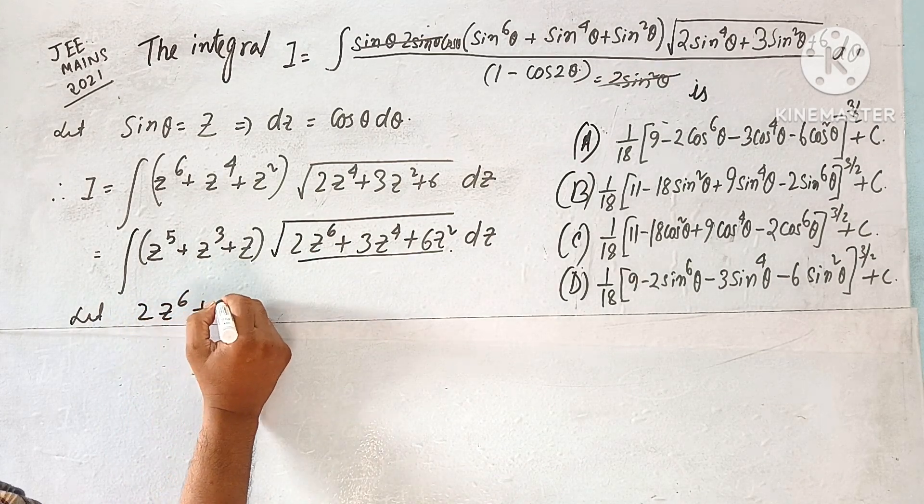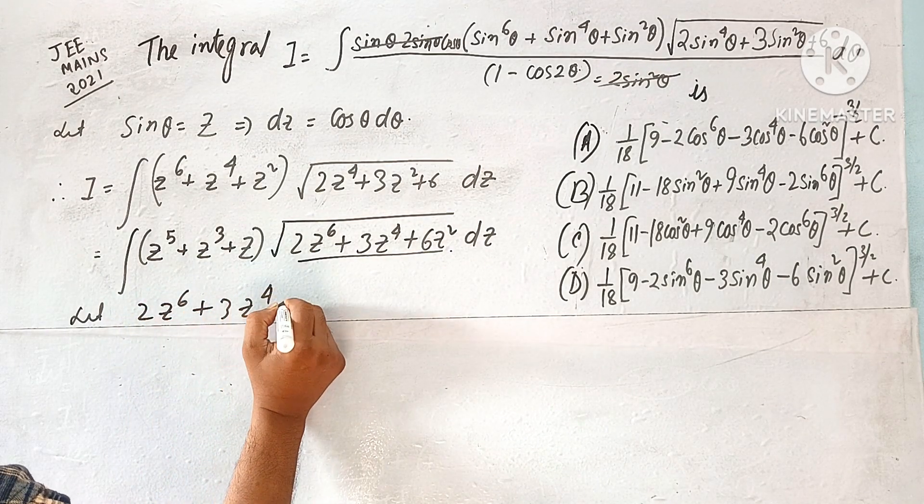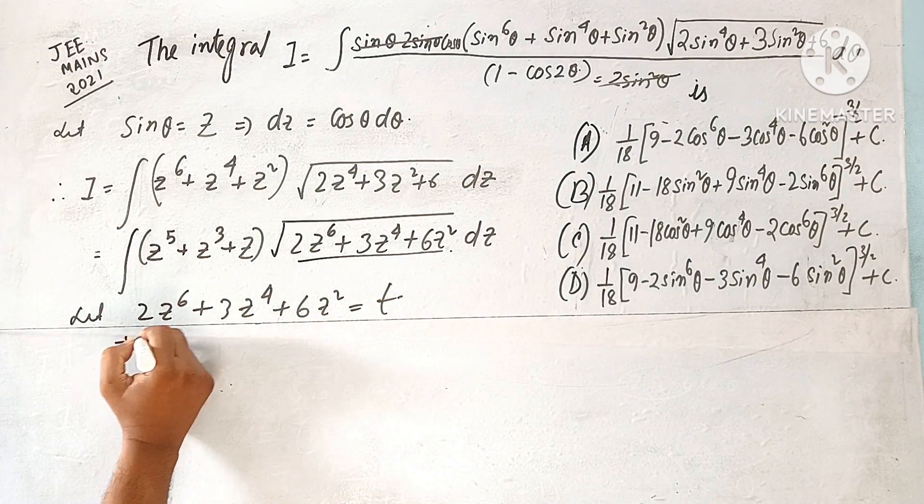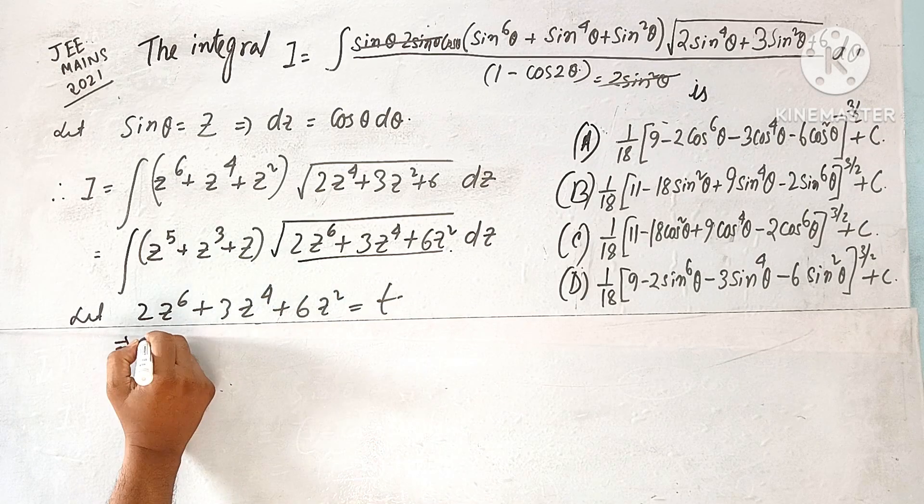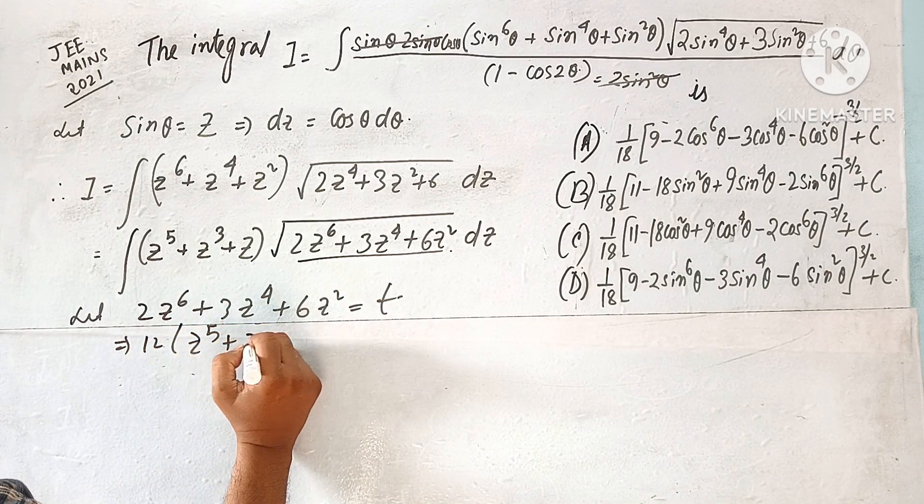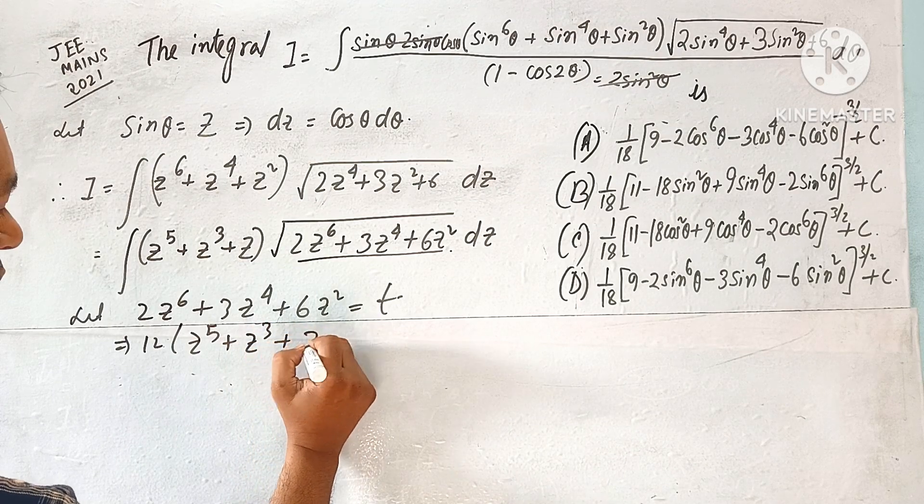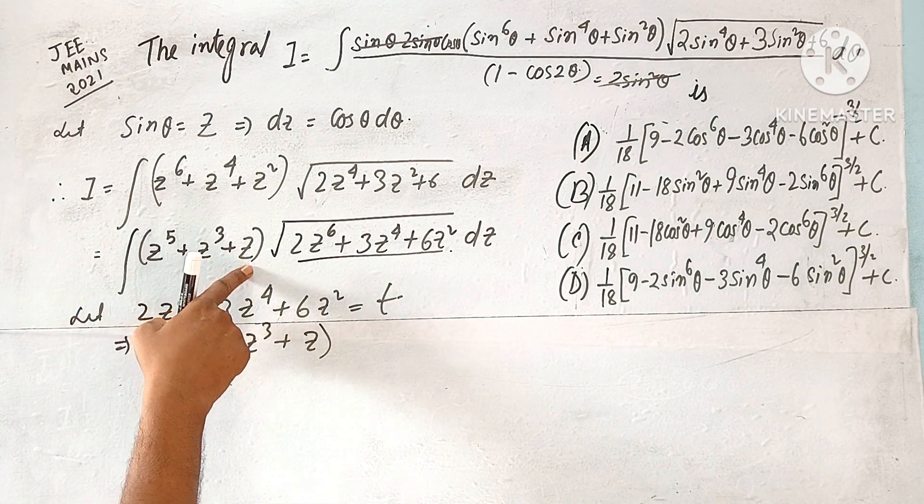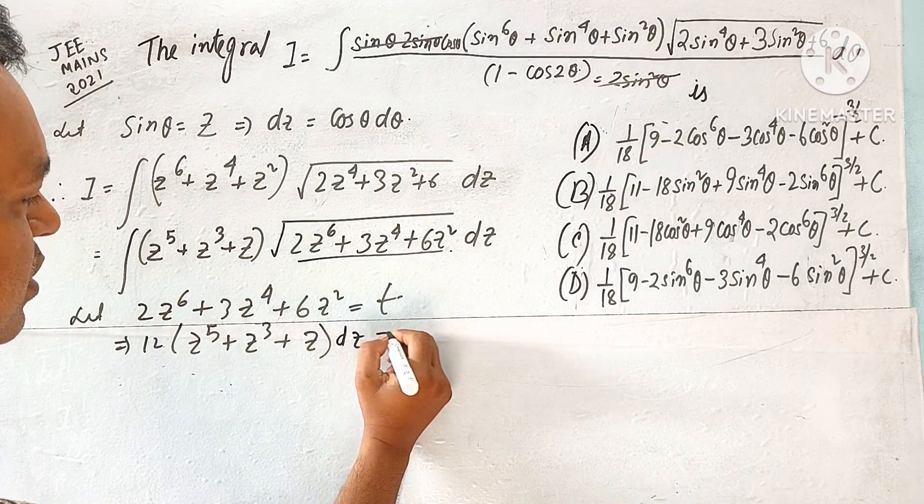z, 2z to the power of 6, z to the power of 6, 3z to the power of 4, 6z square equal to say t. So 12, 12, 12, 12, z to the power 5, z cube, z power 5, z cube, dz equal to dt.